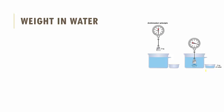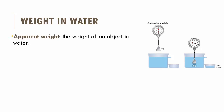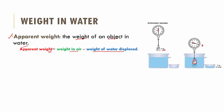Now let's study what our weight in water is. First, let's look at apparent weight — the weight of an object in water. This metal has an actual weight of 5 kg, but its weight in water shows as just 3 kg. Mathematically, apparent weight equals weight in air minus the weight of water displaced. So: 5 kg minus 2 kg of displaced water equals an apparent weight of 3 kg, which is what the weighing scale also shows.